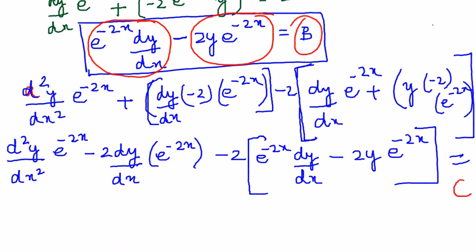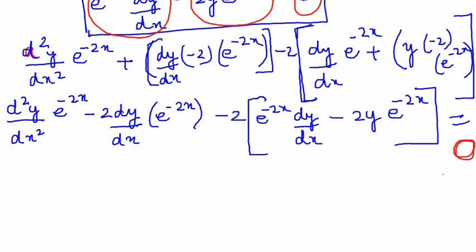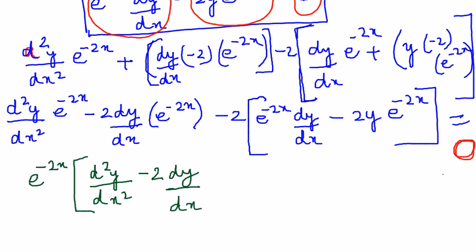So the right hand side of this equation becomes 0. Now if you see, in this entire equation, e power minus 2x is common. So let us take it outside.